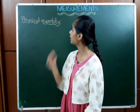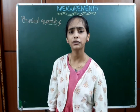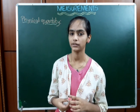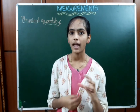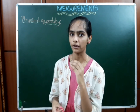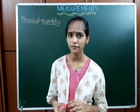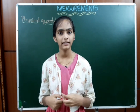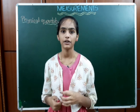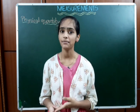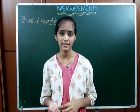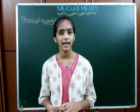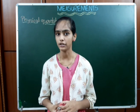First one is physical quantity. The quantity which can be measured is called a physical quantity. For example, we can take a quantity like length, which can be measured in meters, centimeters, kilometers, etc. This is called a physical quantity. The physical quantity is expressed by giving a numerical value and units.